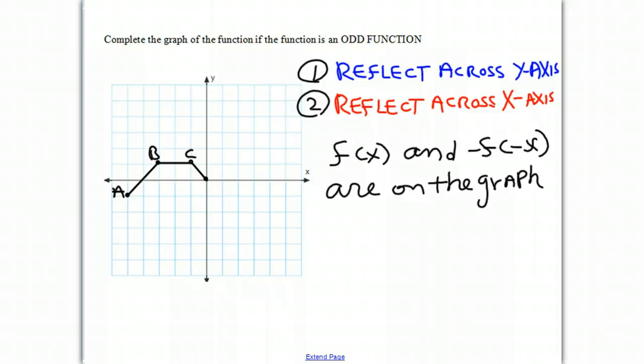So we have point A over here. First we're going to reflect it across the y-axis. Point A is 5 over and 1 down. So now it must be over at 5 over and 1 down on the other side of the y-axis. And that's point A.